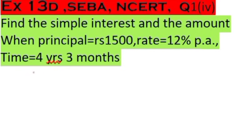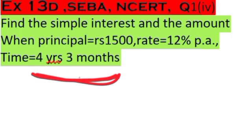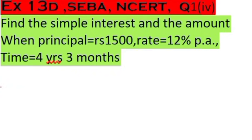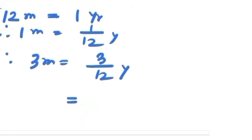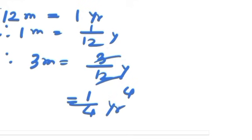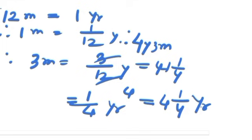We use the formula SI = PRT/100, but here there is one more thing we need to do. This time t is given as four years three months, and since the rate is per annum, our time must be converted into years. 12 months equals one year, so one month equals 1/12 year, and three months equals 3/12 which simplifies to 1/4 year. Therefore, four years three months equals four and one-quarter years.